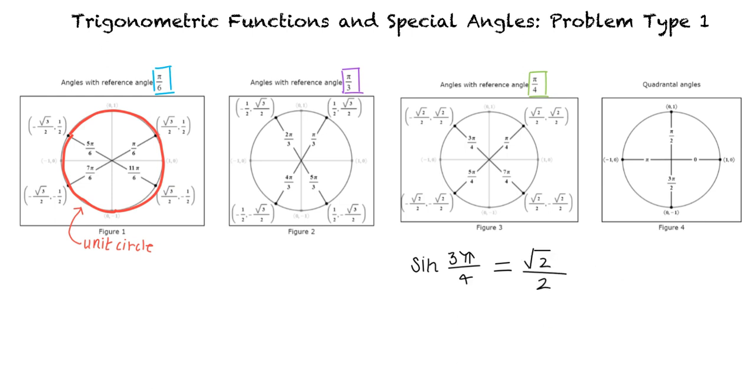And if the problem asks us to find the cosine of 3 pi over 4, our answer would be negative square root 2 over 2, right? That's correct!